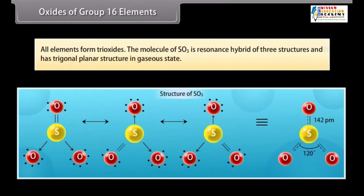SeO2 is weakly acidic while TeO2 is amphoteric. All elements form trioxides. The molecule of SO3 is resonance hybrid of these structures and has trigonal planar structure in gaseous state.